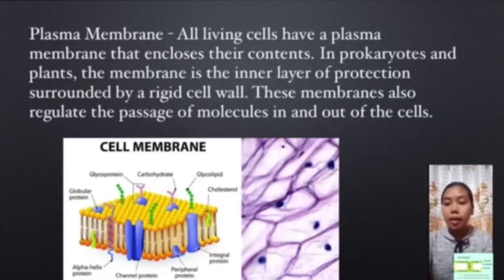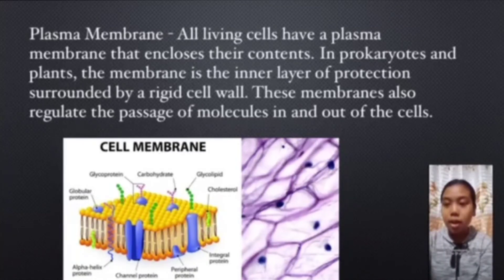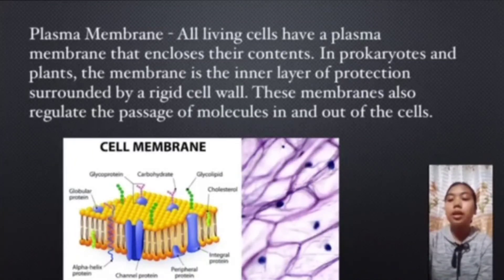Plasma membrane. All living cells have a plasma membrane that encloses their contents. In prokaryotes and plants, the membrane is the inner layer of protection surrounded by a rigid cell wall. These membranes also regulate the passage of molecules in and out of the cell.